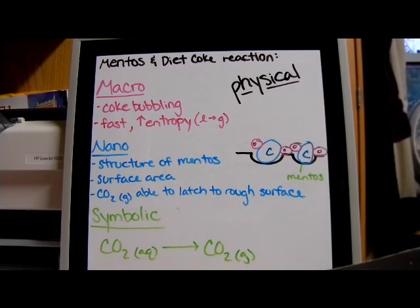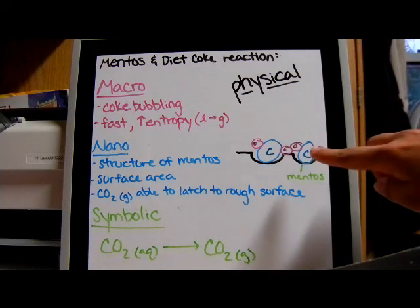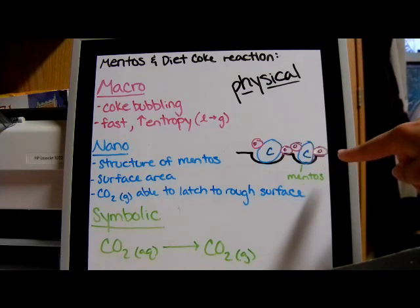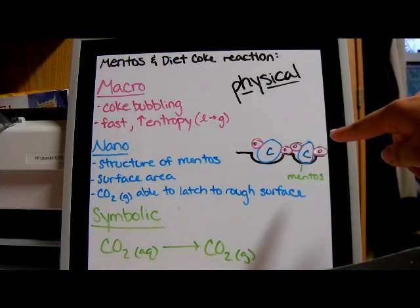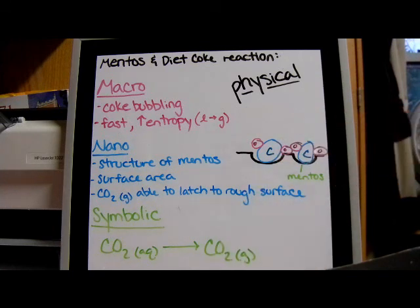This allows CO2 bubbles to attach to the rough surfaces of the Mentos and form quickly in such great numbers that the CO2 gas is able to escape. The geyser-like display is the result of this process. And here I drew an interesting example of what this might look like—the black here represents the dips in the Mentos.